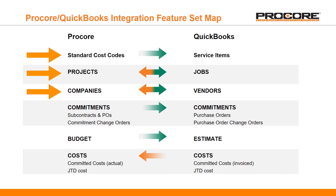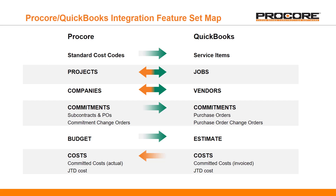If we focus on just the first three rows on this diagram, these are a few of the areas that we believe our customers are saving a ton of time with the elimination of manual or duplicate entry. First, you can take your standard cost codes in Procore and sync them to QuickBooks where they are used to create service items in the item list. You can then use those service items to allocate your costs on transactions that you enter for your projects in QuickBooks.